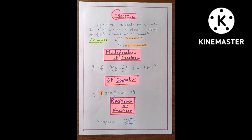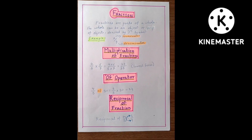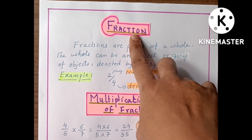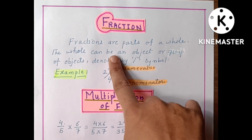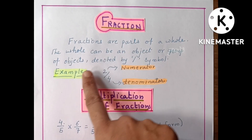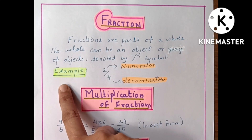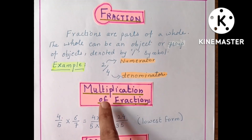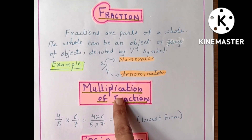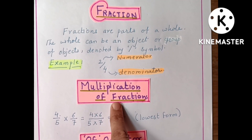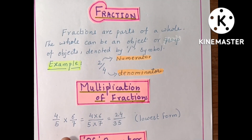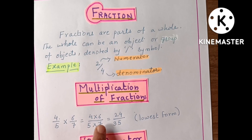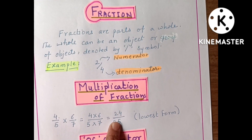The third page is fractions — here is what a fraction is, along with examples. Then multiplication of fractions — here is the multiplication of fractions and here is the product.